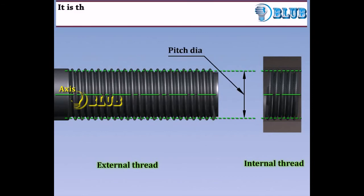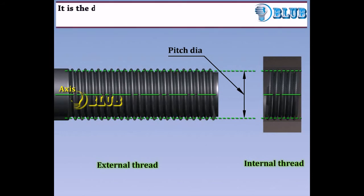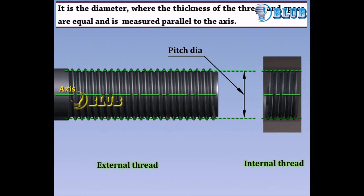Pitch Diameter. It is the mean diameter between the major and minor diameter of the screw thread. It is the diameter where the thickness of the thread and space are equal and is measured parallel to the axis.